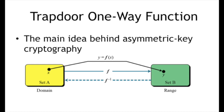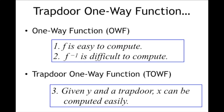Asymmetric key cryptography uses a trapdoor one-way function. A function is a trapdoor one-way function when it is easy to compute the value of the function — that is, f is easy to compute — whereas f inverse is difficult to compute.